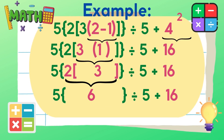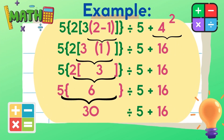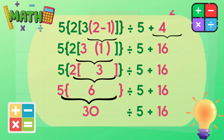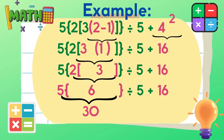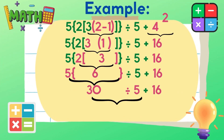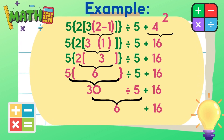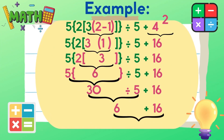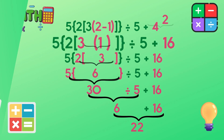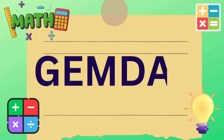Now, let's perform the operations of multiplication and division. So 5 times 6 is equal to 30. Then 30 divided by 5 is equal to 6. The last operation to perform is addition: 6 plus 16 is equal to 22. The answer is 22. This is an example that follows the GEMDAS rule.